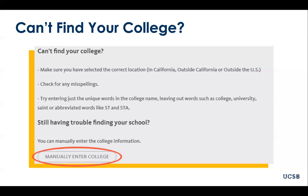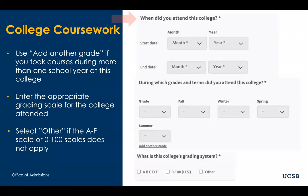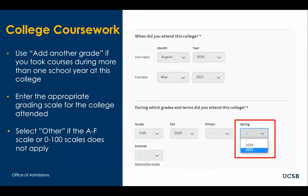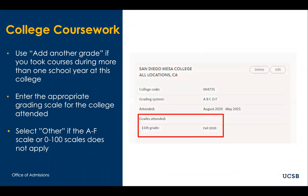This option will become available after attempting to search more than one time. Once you have either found your college or selected to enter it manually, you will then enter the dates in which you attended this college, as well as the grades and academic terms. If you took summer courses, be sure to check the appropriate box so you will be prompted to enter those courses as well. Selecting the terms attended is very important, since if you forget to select a term that you attended, you will not be able to enter courses and grades for that term later in the application.